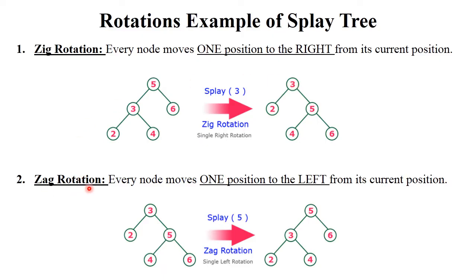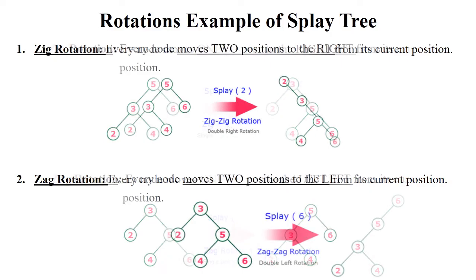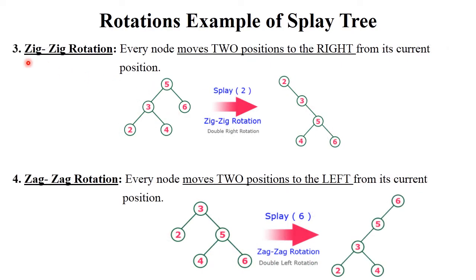Now see zag rotation — zag means single left rotation. In this given tree you need to perform zag rotation on node five, meaning five moves to the left side. So five goes here on the left side, three goes here, and two goes here. Finally this binary tree is generated and five becomes the root of the tree.